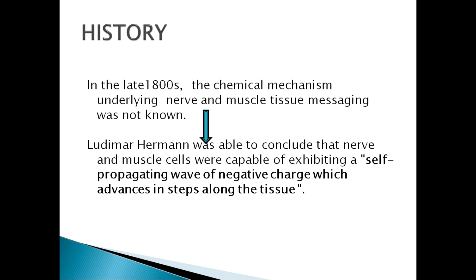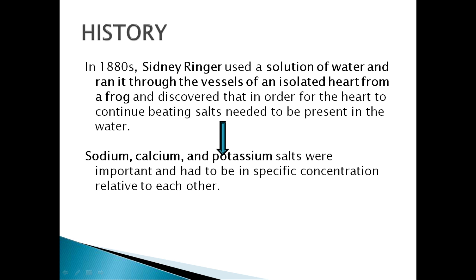After the definition of the ion channel, let's see the history of ion channels. In the late 1870s, the chemical mechanism underlying nerve and muscle tissue messaging was not known, and Ludimar Hermann was able to conclude that nerves and muscle cells were capable of exhibiting self-propagating waves of negative charges which advance in steps along the tissues.